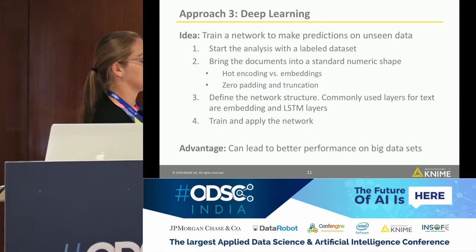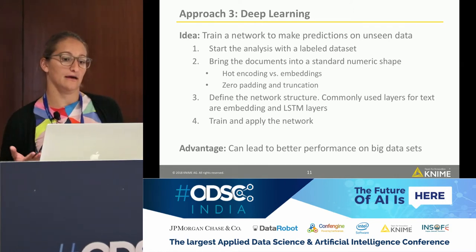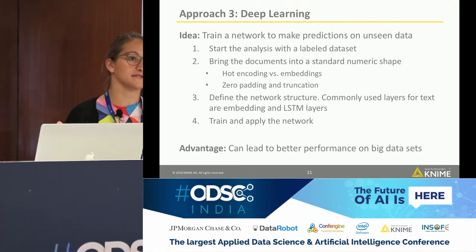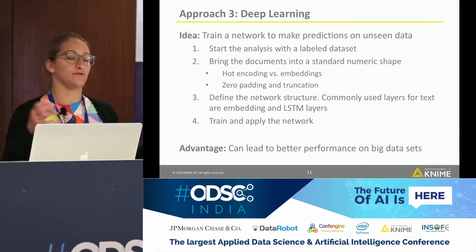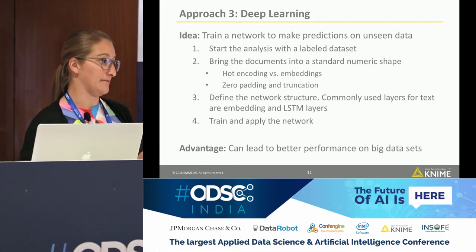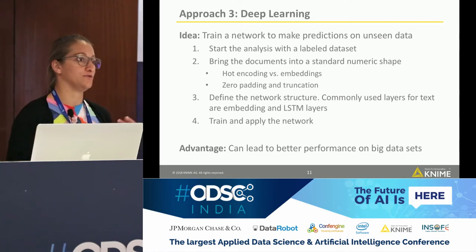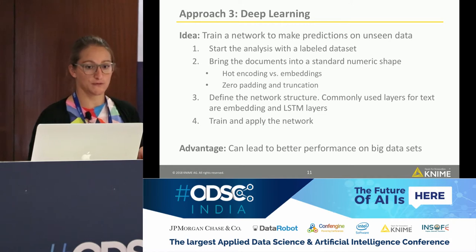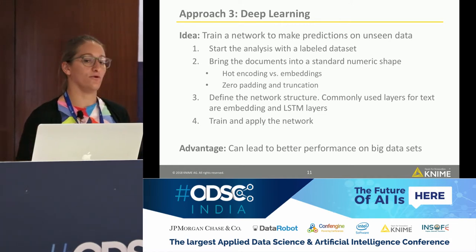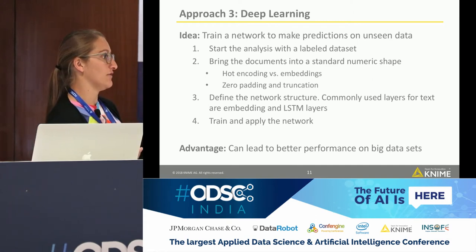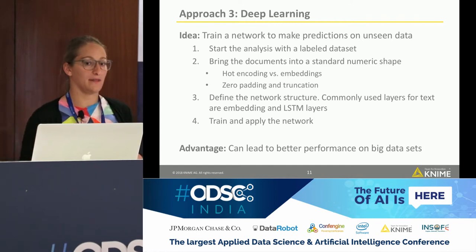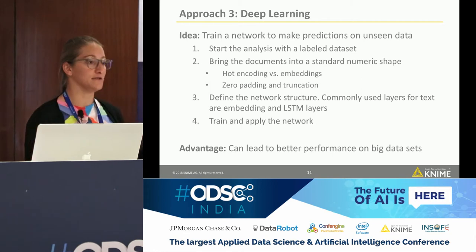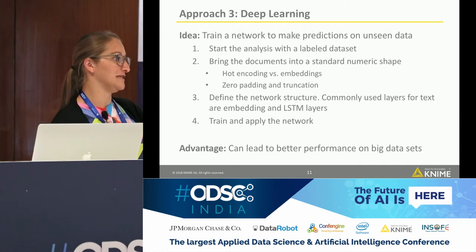The third approach is the deep learning approach, where we train a network to make predictions. The starting point is the same — a labeled dataset — but the pre-processing is different. In machine learning we encode which word is in the text; in deep learning we treat a text as a time series, interested also in the series of words. To train a network, we bring all documents to the same shape: we first encode each word with a number, because a network only understands numbers — a hot encoding where 'he' gets number one, 'she' gets number two, and so on.